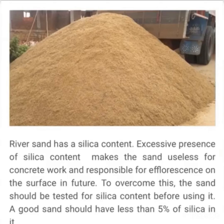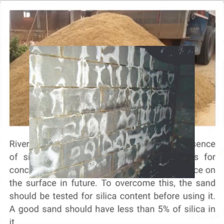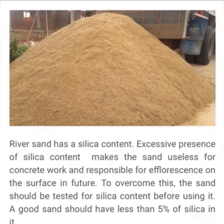The most important thing to remember is to test river sand for silica content — it should be less than five percent. Silica plays a major role in concrete works and may be responsible for efflorescence, meaning saltiness on concrete surfaces, which can cause cracks and damage to the concrete structure in the future. To overcome these issues, ensure the sand contains less than five percent silica according to standards.